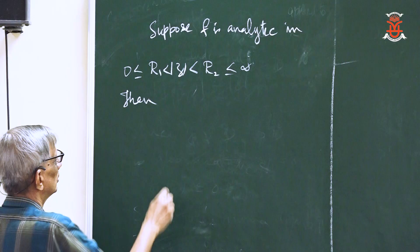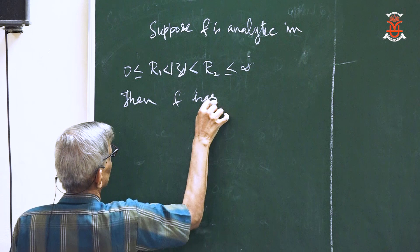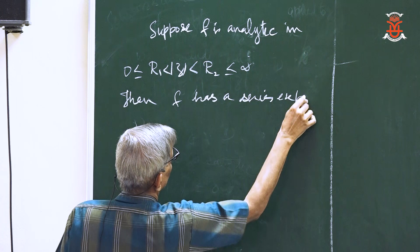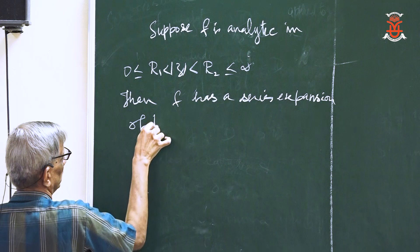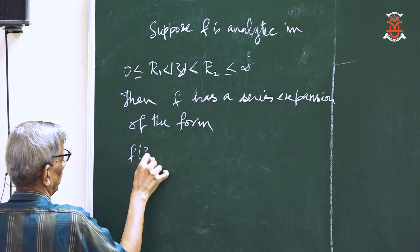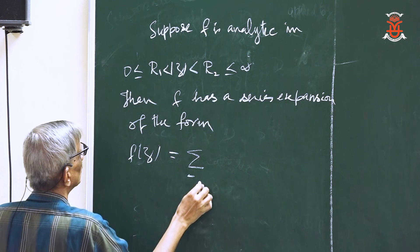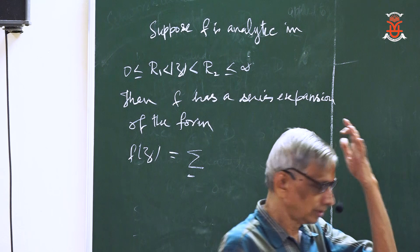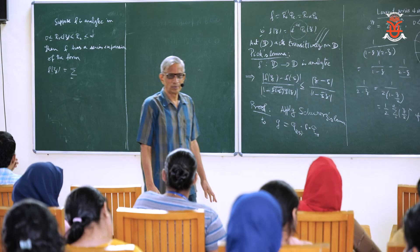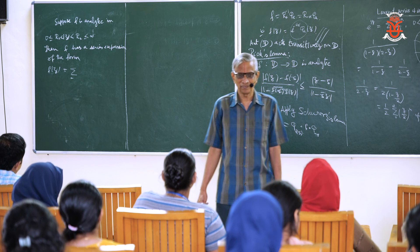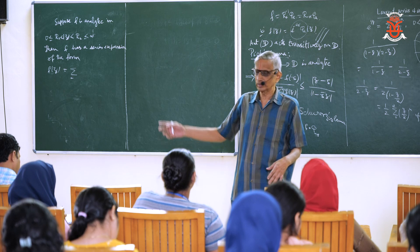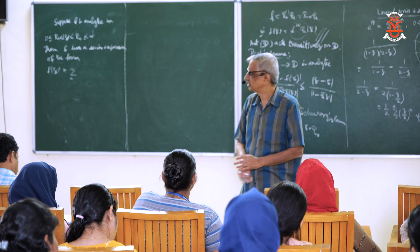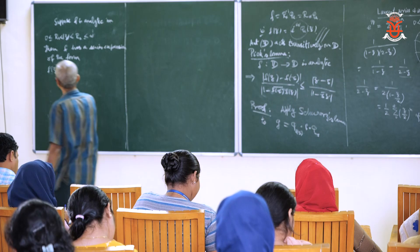So f has a series expansion of this form. I am writing around 0, but you can also write around any point — instead of |z| there, you can write |z − z₀|. I am going to state the theorem in general form.